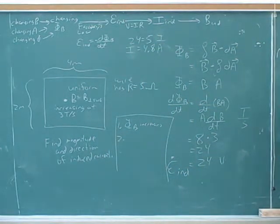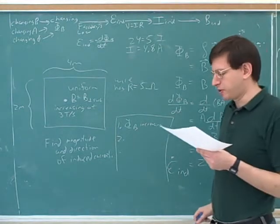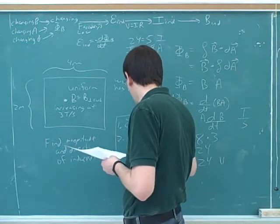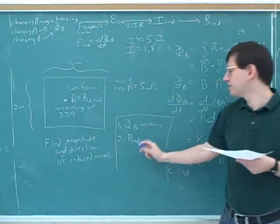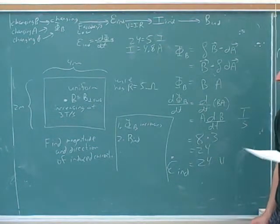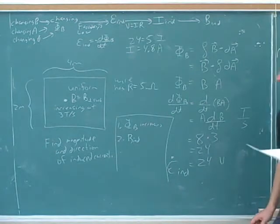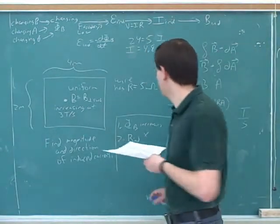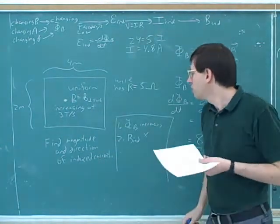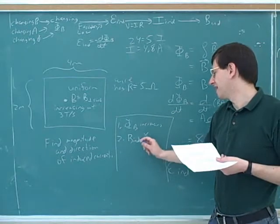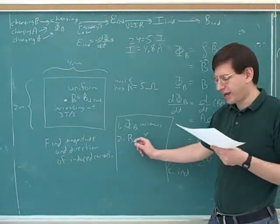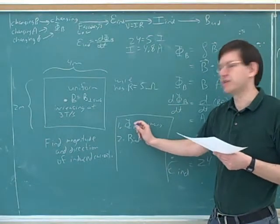Now we go on to step two. The induced field is supposed to oppose the flux. What direction should it be in to oppose this? Should the magnetic field be pointing out of the page or into the page? What we have is more and more flux out of the page, so the way to overcome that is to have an induced field that's into the page. That's Lenz's law — the direction of the induced field opposes the change.